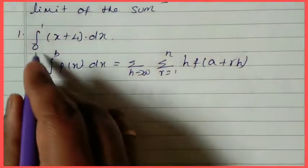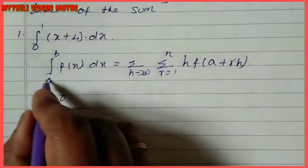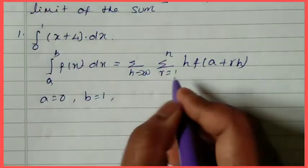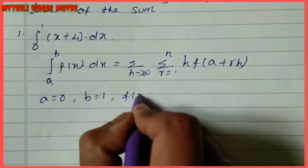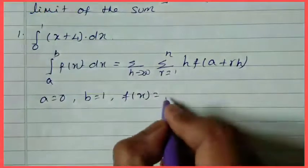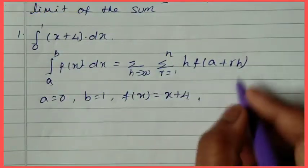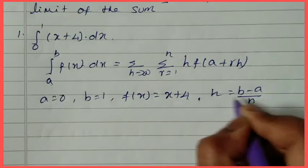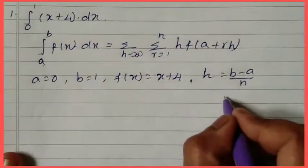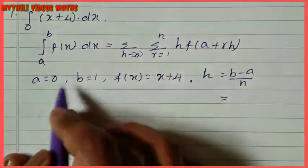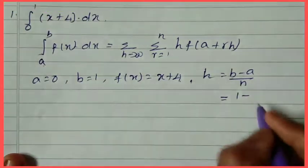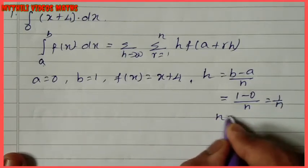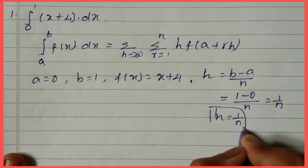Applying this formula, we identify our values: a equals 0 (the lower limit), b equals 1 (the upper limit), and f(x) equals x plus 4. Then h equals b minus a divided by n, which gives us 1 minus 0 divided by n, so h equals 1 by n. This is the h value.